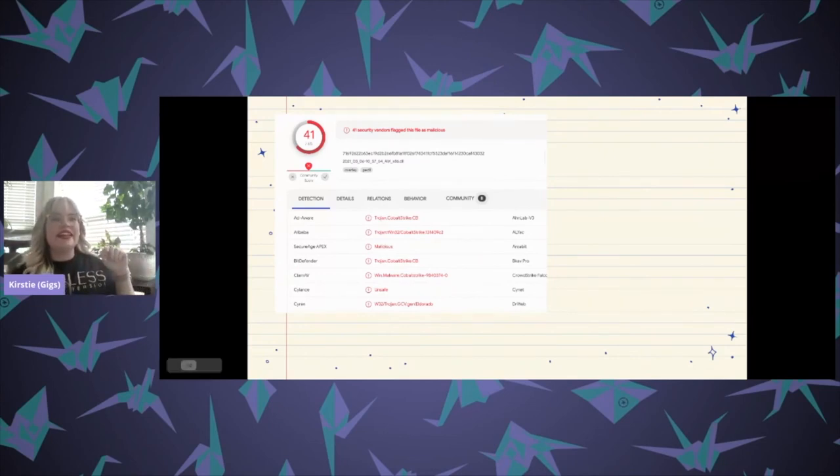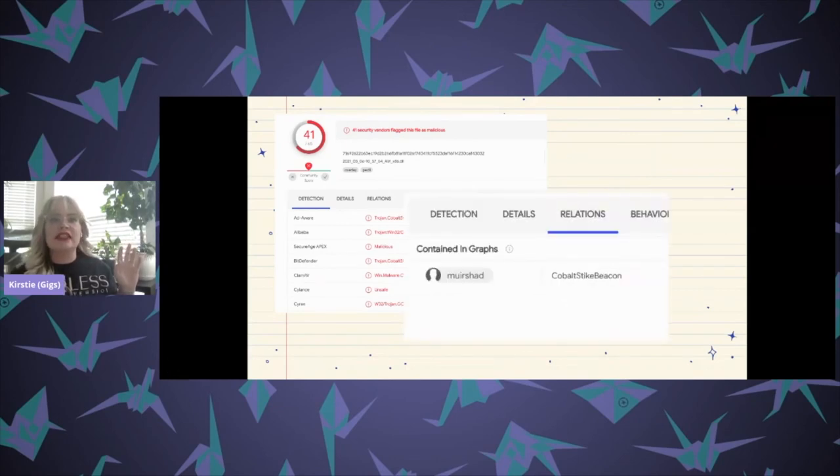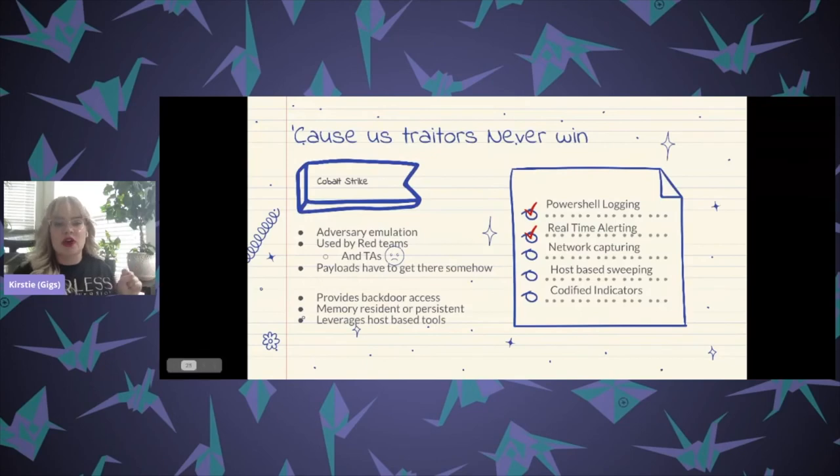So here we see that, you know, there are a bunch of different vendors that are detecting it as Cobalt Strike. Let's go ahead and look at the relations. And of course we see that, yep, it is a Cobalt Strike beacon. All right. So what the heck is Cobalt? What the heck is beacon? Right? So let's talk through what Cobalt Strike is. Cobalt Strike was originally created as an adversary emulation tool that's often used by red teamers to perform red team engagements.